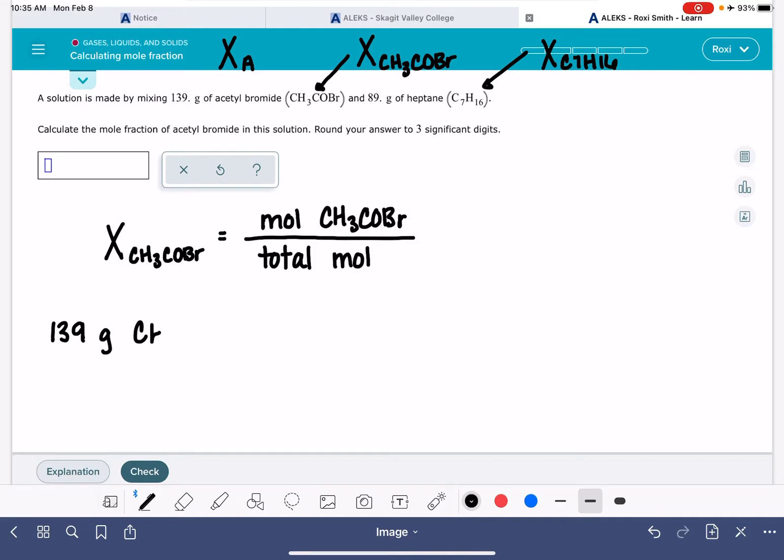139 grams of CH3COBr. When you're solving these problems on ALEKS, it's really important that you use ALEKS's calculator so that you can get exact molecular weights for these substances, because ALEKS is really picky about getting an exact molecular weight.